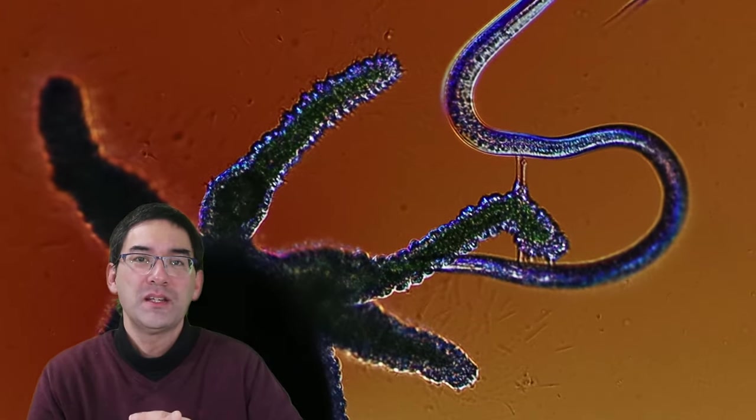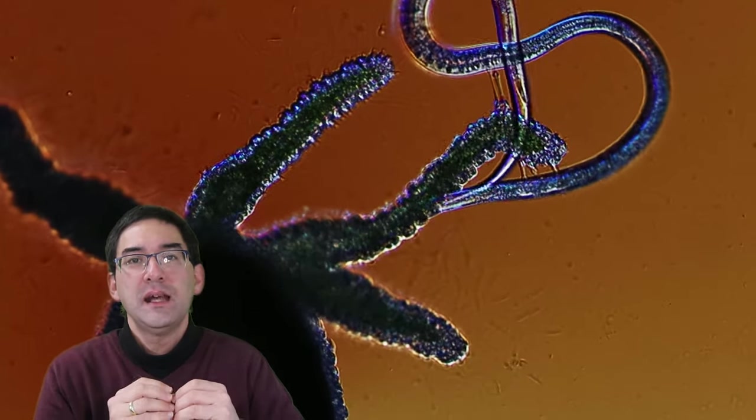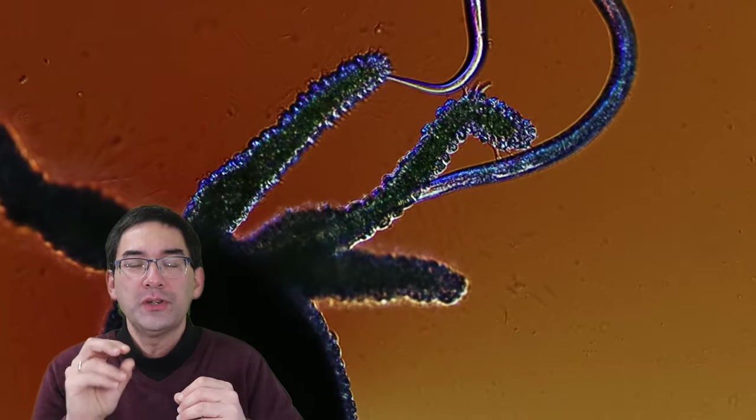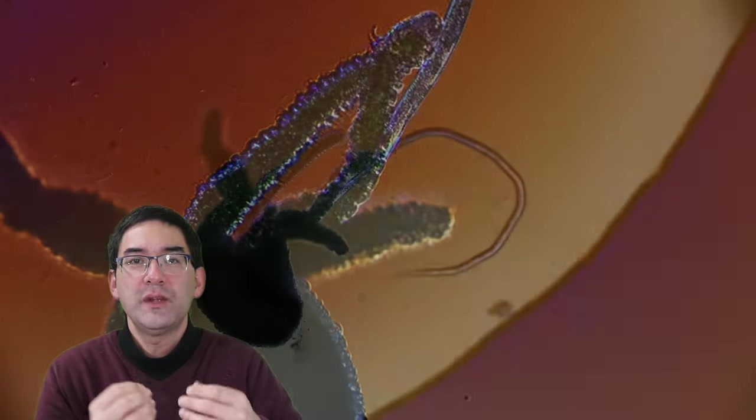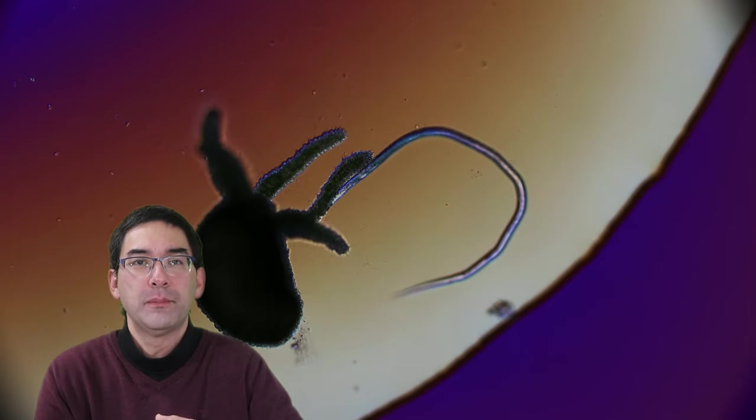So here, this one is a very interesting one. Here you can actually see the cells, the stinging cells, and how they've actually shot out little strings. And these strings are able to transport poison to paralyze the prey.